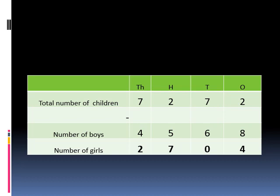2 minus 5, not possible because 2 is smaller than 5. So, we have to borrow from 7. 7 becomes 6 and 2 becomes 12. 12 minus 5 is 7. 6 minus 4 is 2.